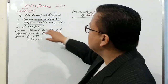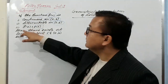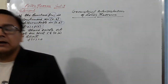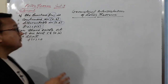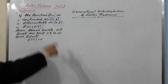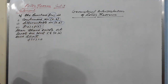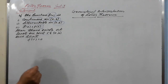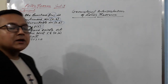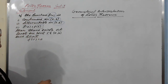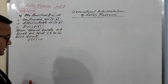Now let's see the conditions one by one. There are three conditions in Rolle's Theorem, known as Rolle's conditions. If these three conditions are satisfied, then there exists at least one point c belonging to (a, b) such that f'(c) = 0. Now let's see the geometrical interpretation condition by condition.